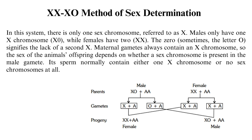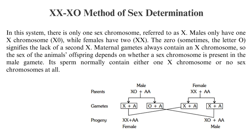Maternal gametes always contain an X chromosome, so the sex of the animal's offspring depends on whether a sex chromosome is present in the male gamete. Sperm normally contain either one X chromosome or no sex chromosomes at all.